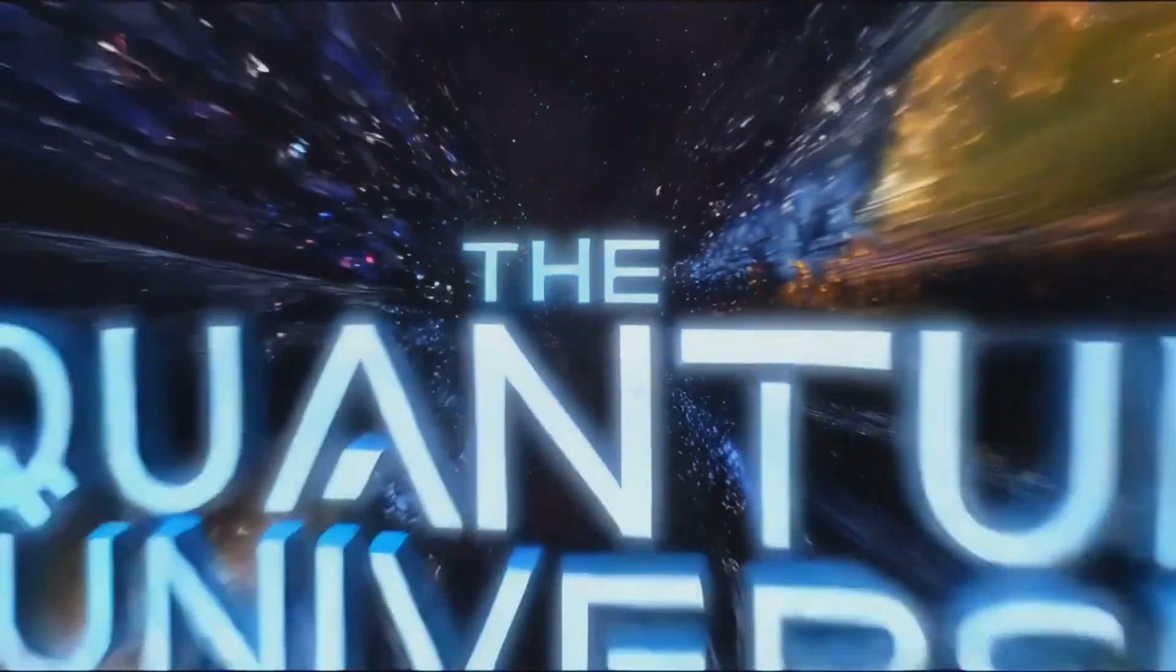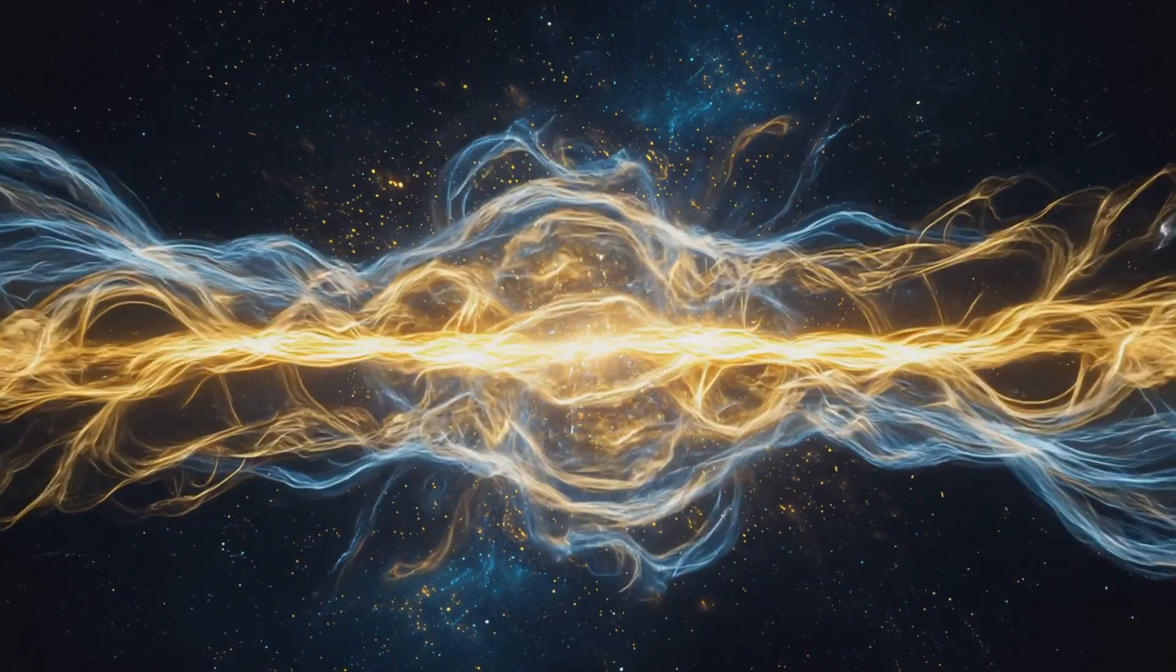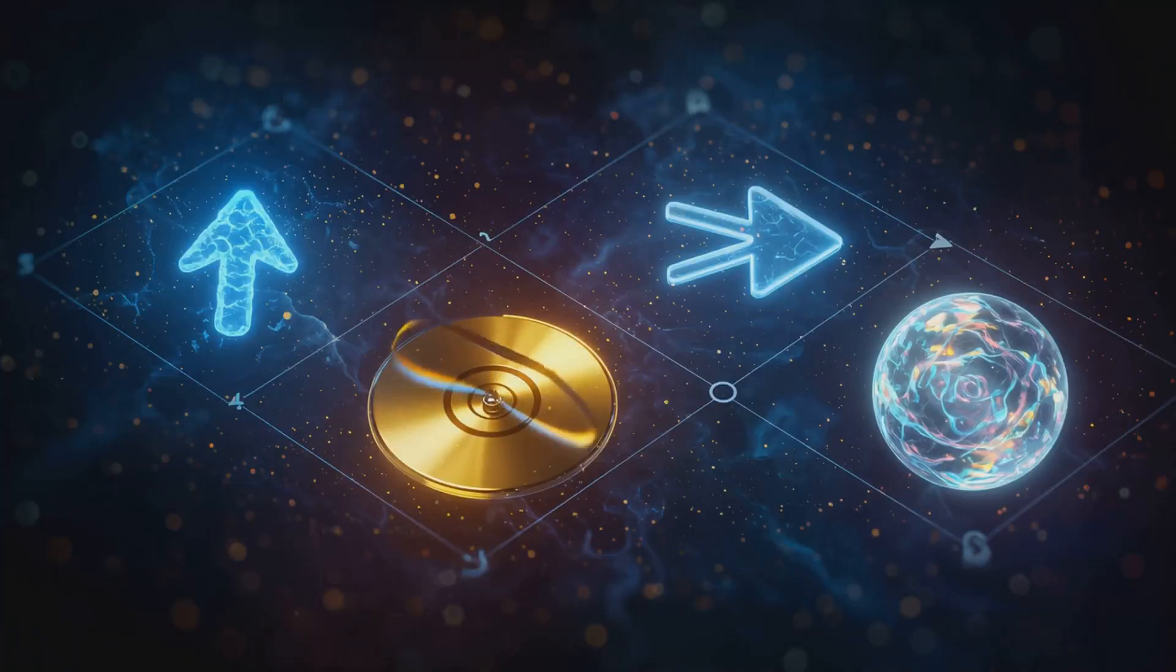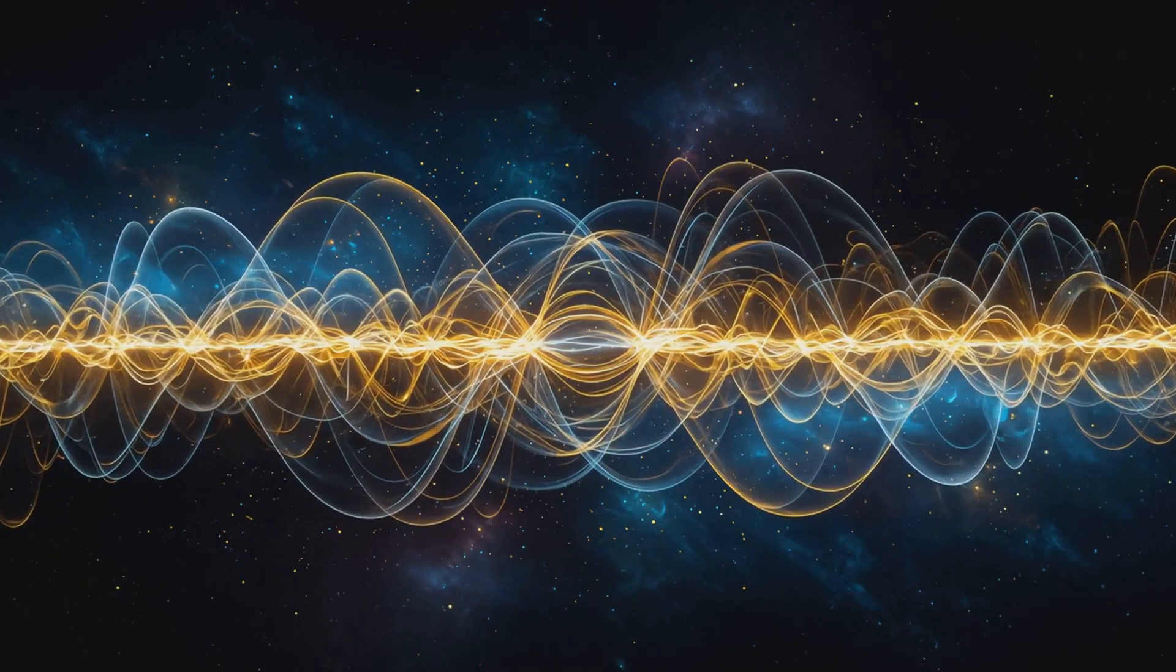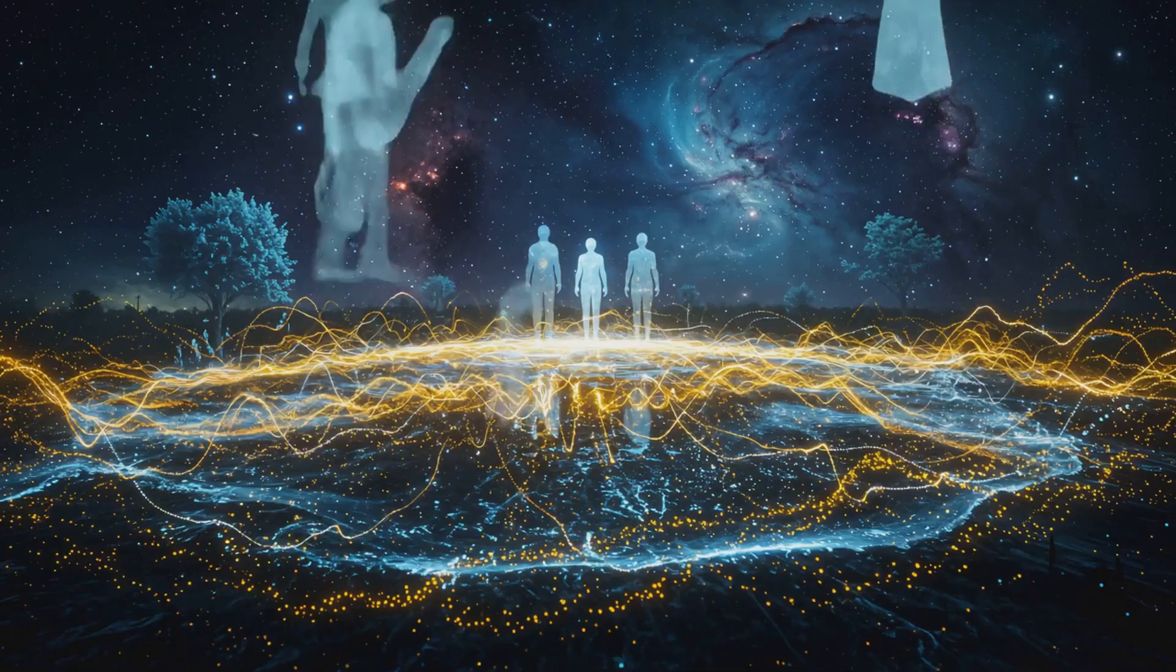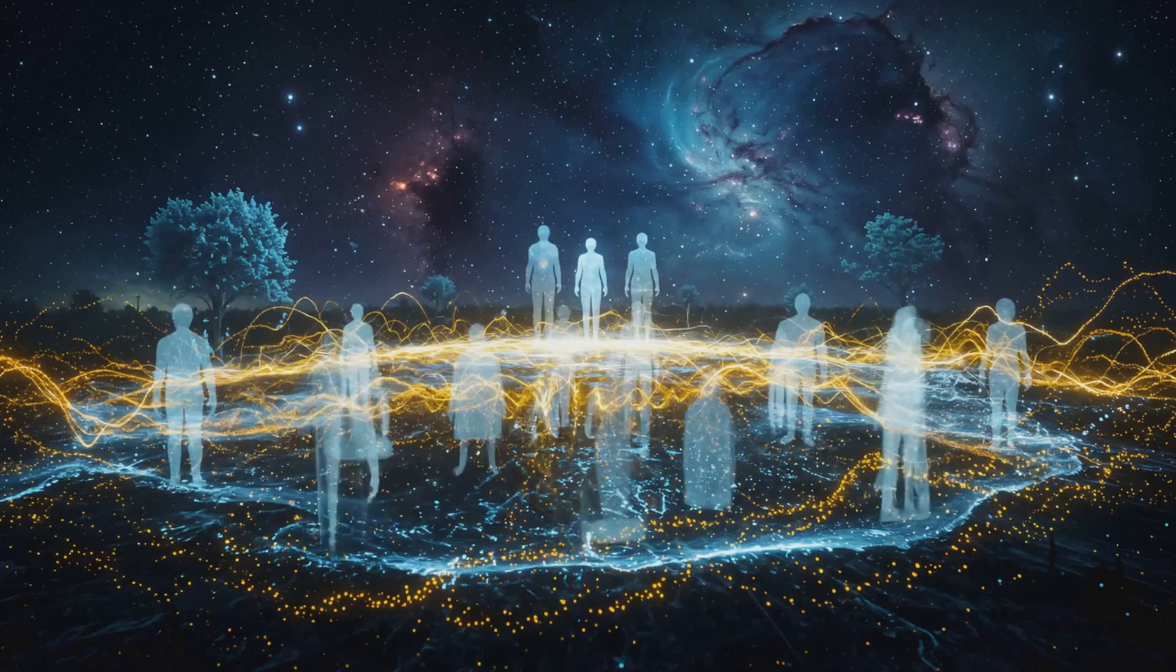If the universe could be written as a single line, it would say reality is the sum of all decoherence-resistant quantum frequencies, each one defined by its amplitude, its likelihood, angular frequency, its spin, wave vector, its direction, and phase, its starting point. Together they interfere and overlap into the projection of all that we see, feel, and become.